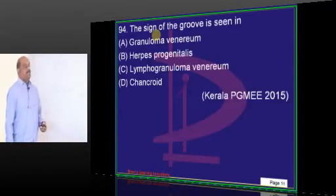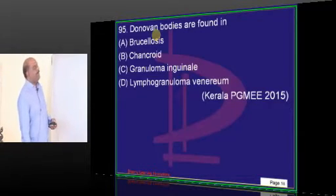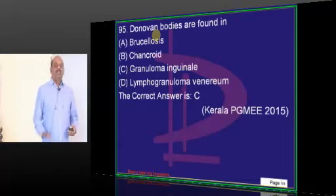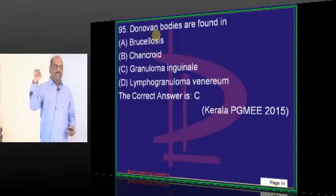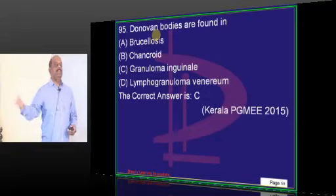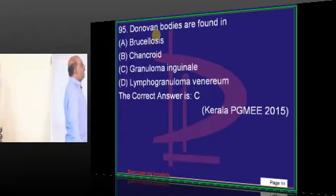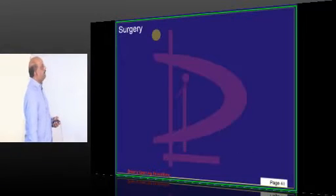The groove sign is classically associated with lymphogranuloma venereum. The five conditions causing genital ulcers — definitely one question will come in dermatology — are: syphilis, herpes simplex, lymphogranuloma venereum, chancroid, and granuloma inguinale. Donovan bodies are typically found in granuloma inguinale.